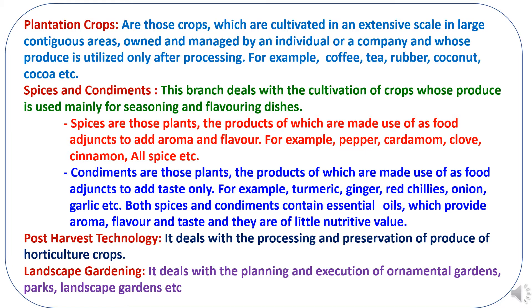Examples of plantation crops include coffee, tea, rubber, coconut and cocoa. Then the next division is spices and condiments. This branch deals with the cultivation of crops whose produce is used mainly for seasoning and flavoring dishes. Spices are those plants whose products are used in food and beverages to add aroma and flavor — like pepper, cardamom, clove, cinnamon and other spices.